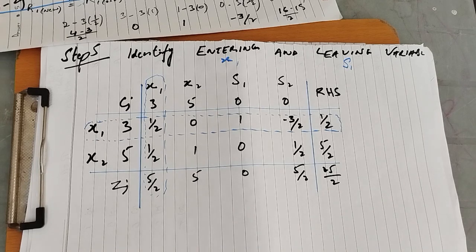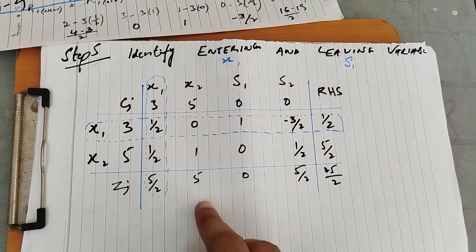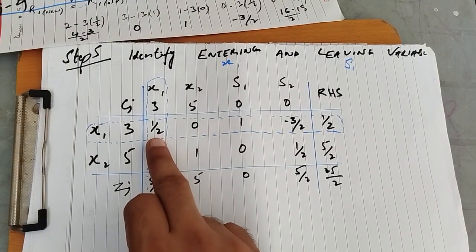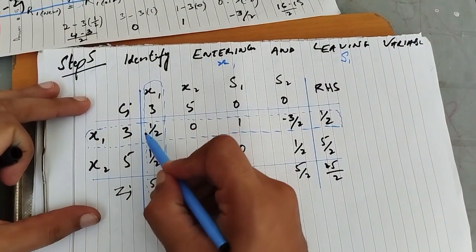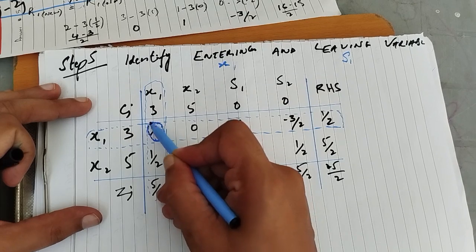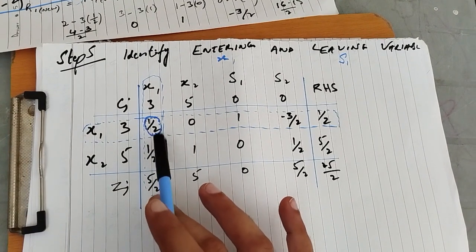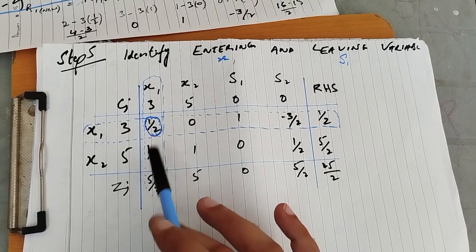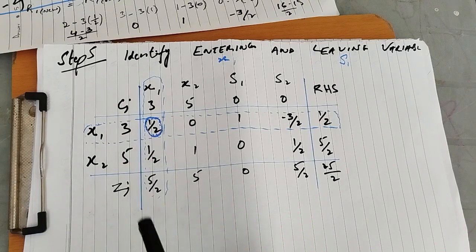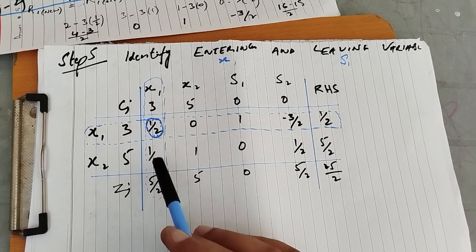Now we start the next step: pivot to update the tableau. The pivot element is 1/2. To update, the pivot element must become 1, and the remaining elements in the pivot column must become 0. To make the pivot element 1, we multiply by 2.